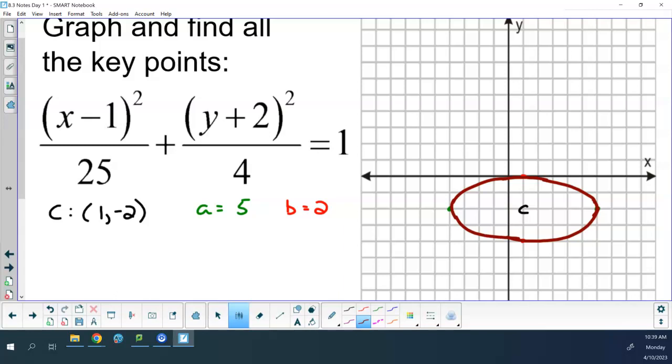Step number 5, vertices. My vertices left and right or up and down? Left and right because left and right is longer. So that means that I have vertices at negative 4 comma negative 2 and 6 comma negative 2.